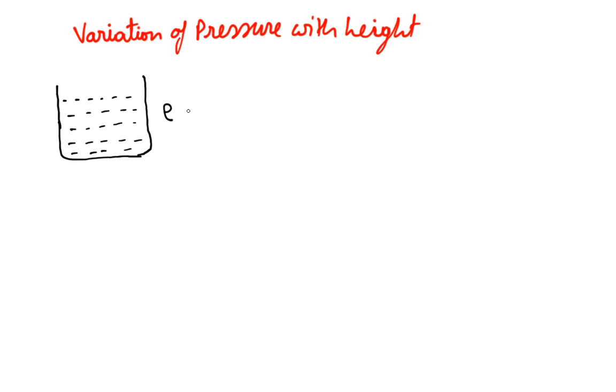The fluid has a density rho. The question is: how does the pressure change inside the fluid? The pressure, let's say, is P naught here, where P naught is the atmospheric pressure.